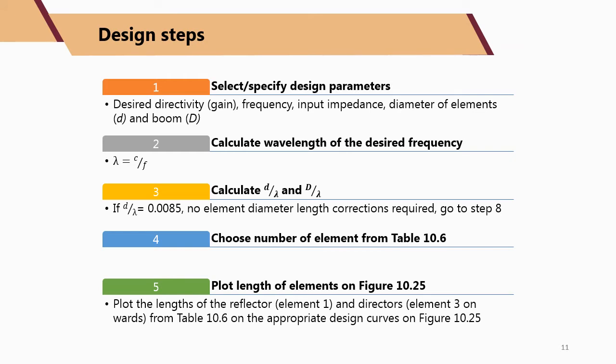The design steps are: Step 1 — specify design parameters including directivity, gain, frequency, input impedance, element diameter d, and boom diameter D. Step 2 — calculate the wavelength: lambda = c/f, where c is the speed of light. Step 3 — calculate the ratio d over lambda (element diameter over wavelength) and D over lambda (boom diameter over wavelength). If d over lambda equals 0.0085, no element diameter correction is required and you proceed directly to Step 8 for the correction factor.